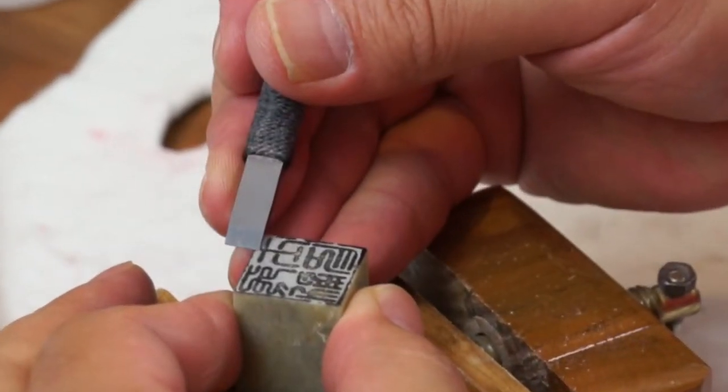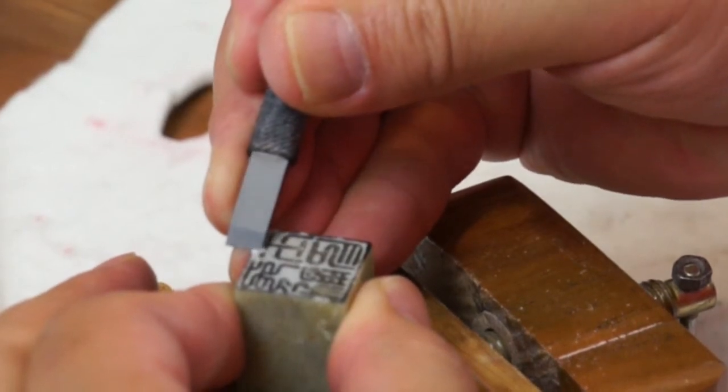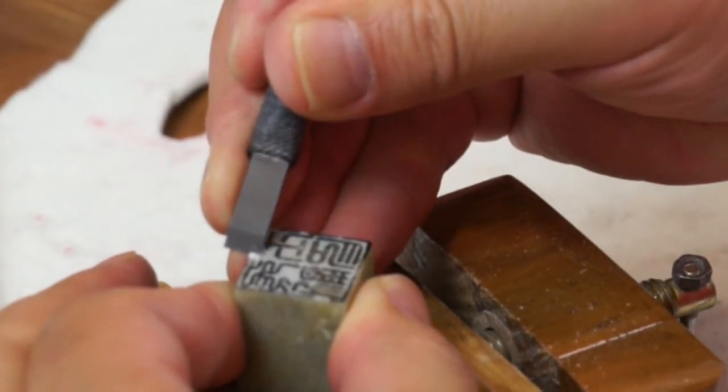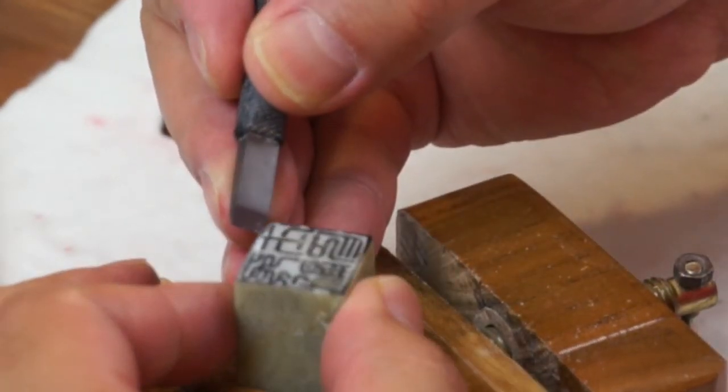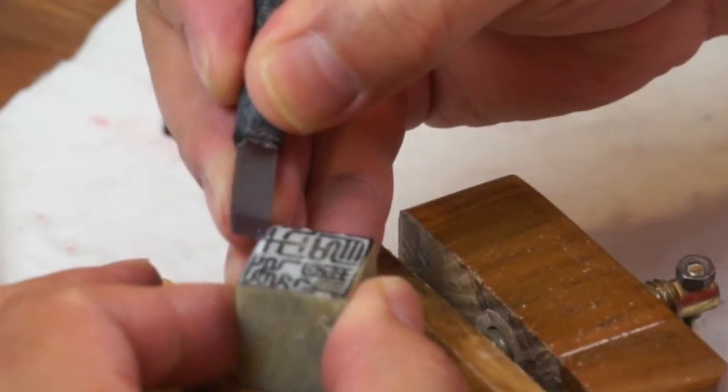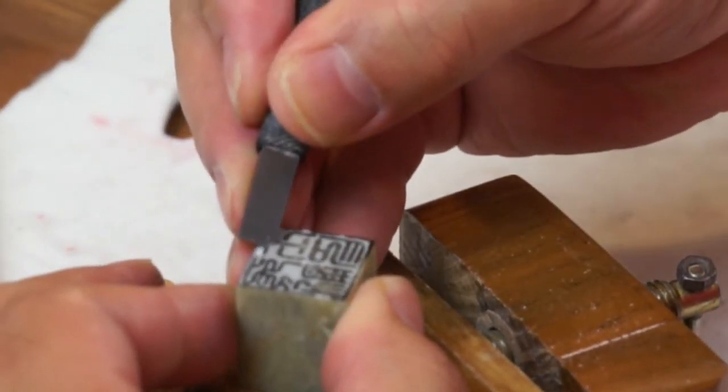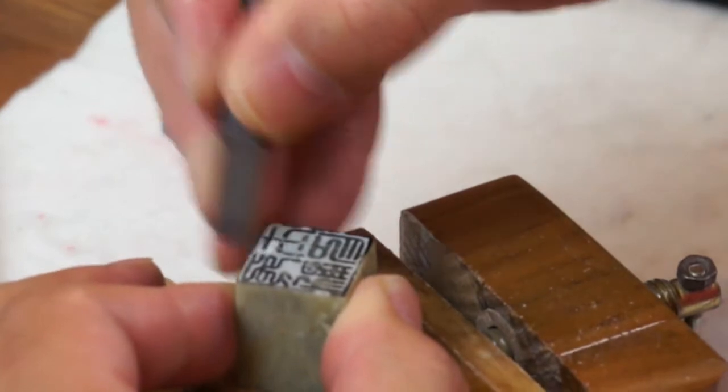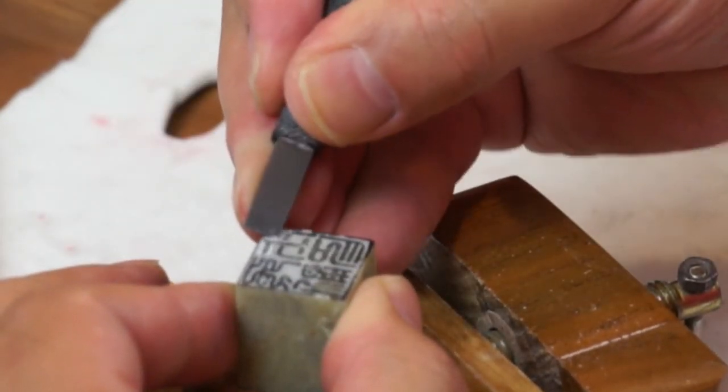So I use a Yang or the positive carving. So the background is cut out. It doesn't matter where you start, just for convenience. I start from this character Shi meaning Warrior.